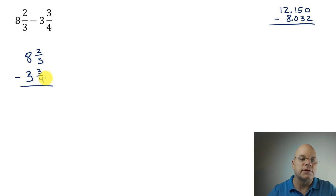You need a common denominator to create like terms. In this case we have thirds and fourths. Thirds and fourths can both become twelfths.